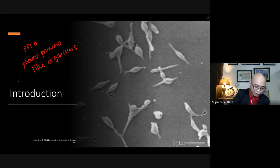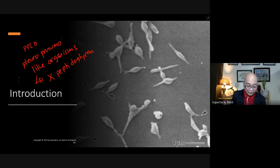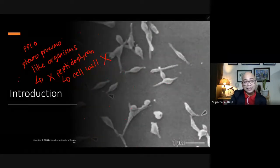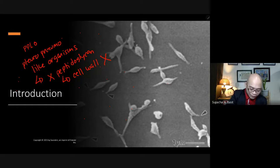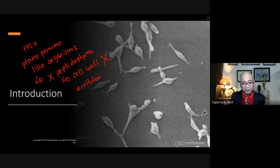This particular group of bacteria do not have peptidoglycan, and peptidoglycan is the major component of the cell wall. So they do not have a cell wall. This bacteria can be known as acellular bacteria because of the fact that they do not have a cell wall.